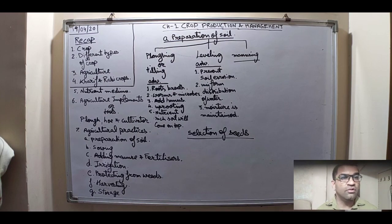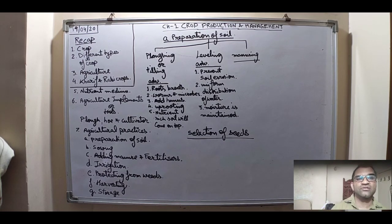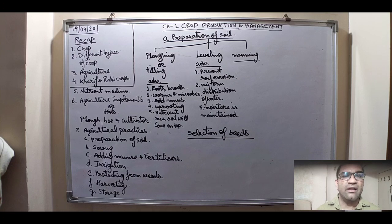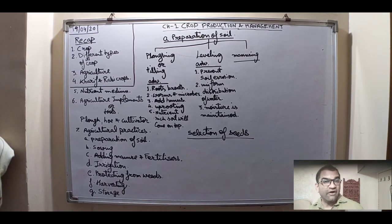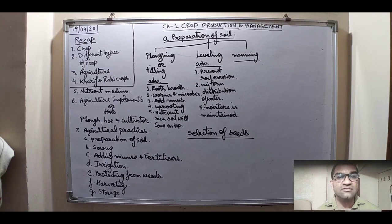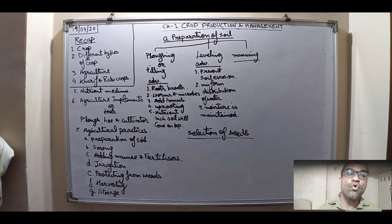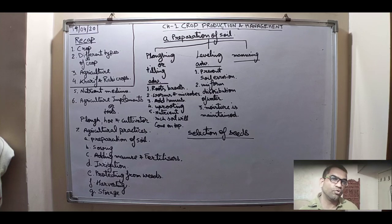After having the tools, the farmer must follow several practices in the field to grow the crop. As you can see on the board, the first practice is preparation of soil, followed by sowing seeds, adding manure and fertilizer, irrigation, removing weeds, harvesting, drying the seeds, and finally storage.